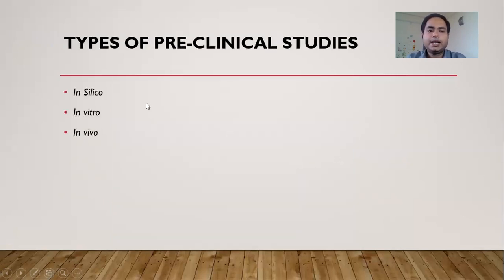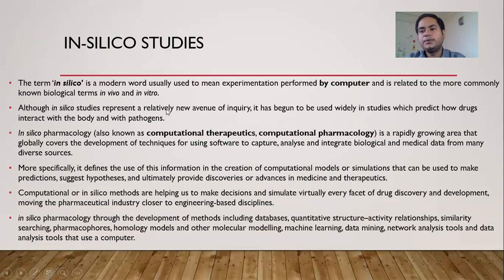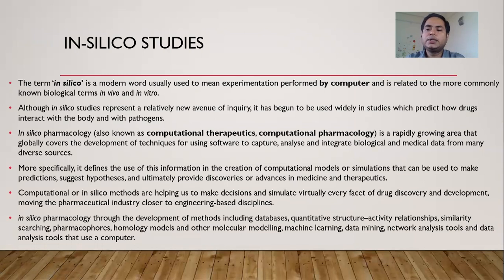There are some types of pre-clinical study discussed in this lecture: in silico, in vitro, and in vivo study. The term in silico is a modern word usually meaning experimentation performed by computer, and is related to the more commonly known biological terms in vivo and in vitro. Although in silico study represents a relatively new avenue of inquiry, it has begun to be used widely in studies that predict how drugs interact with the body and with pathogens.